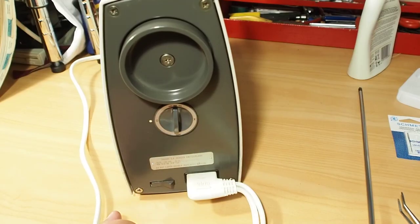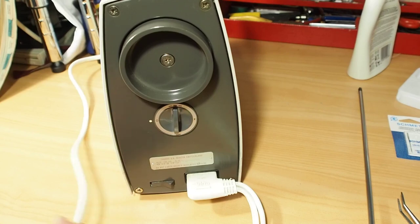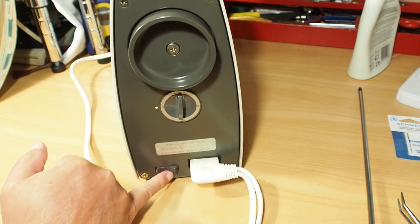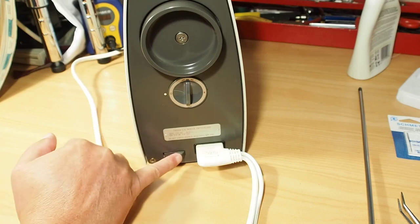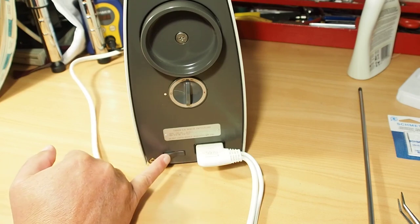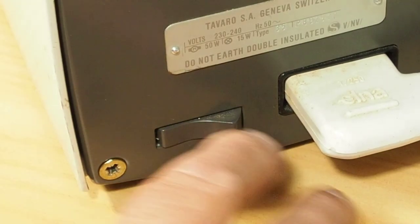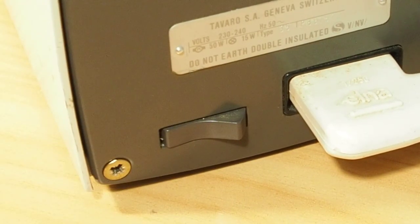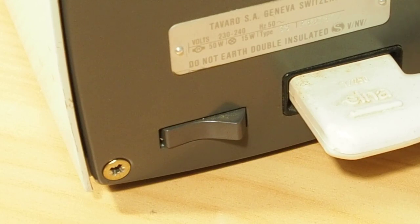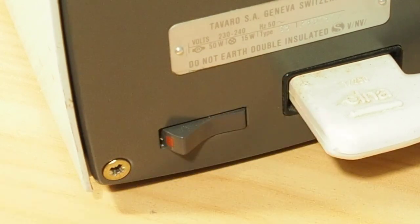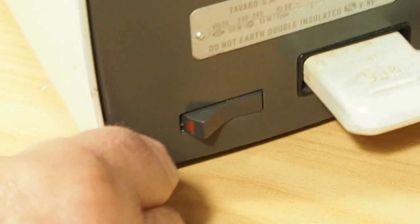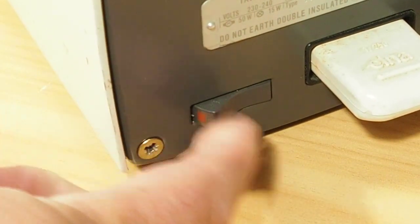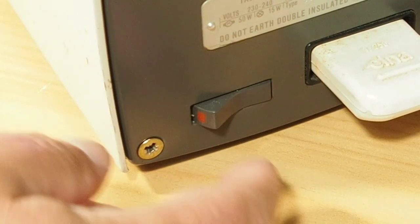And you'll also notice down here there's an on-off switch. But that's really just for the bulb. So you've got that's the bulb off position. You can hear if I put my foot down, the motor's still driving. And there we've got the bulb on position. So that switch is solely for the bulb. It does not affect the motor.